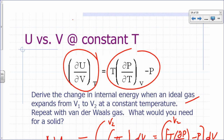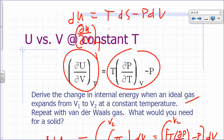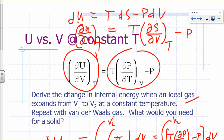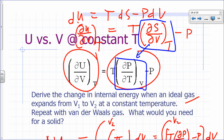From du = T dS - P dV, the partial of U with respect to V at constant T equals T times the partial of S with respect to V at constant T. We divide through by dV at constant T, and then we use a Maxwell relation to show that partial of S with respect to V at constant T equals partial of P with respect to T at constant V.